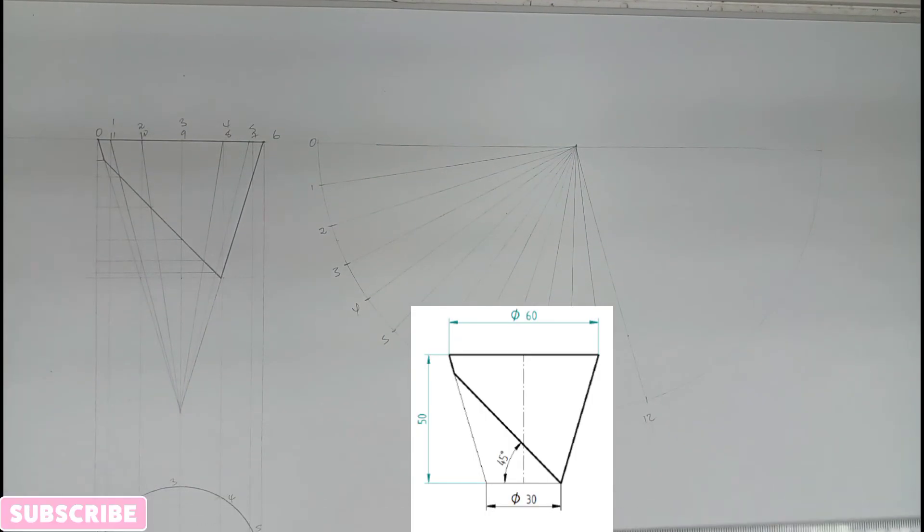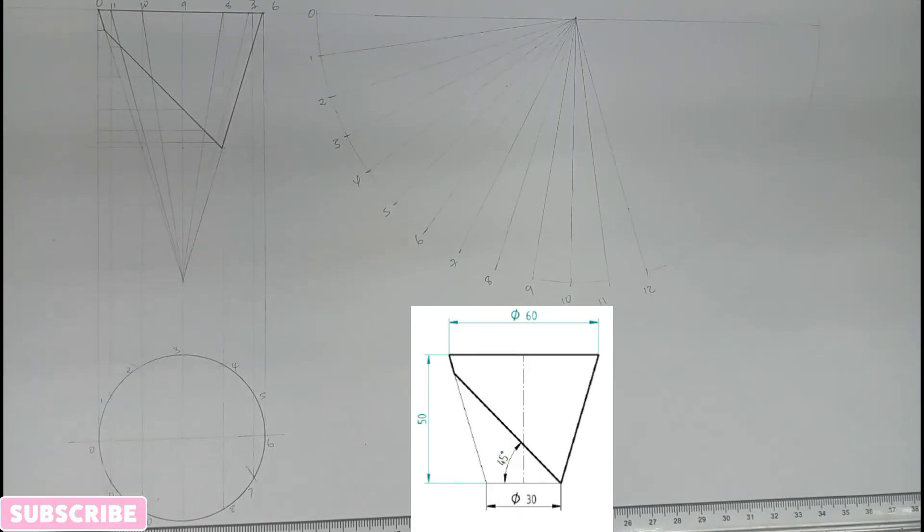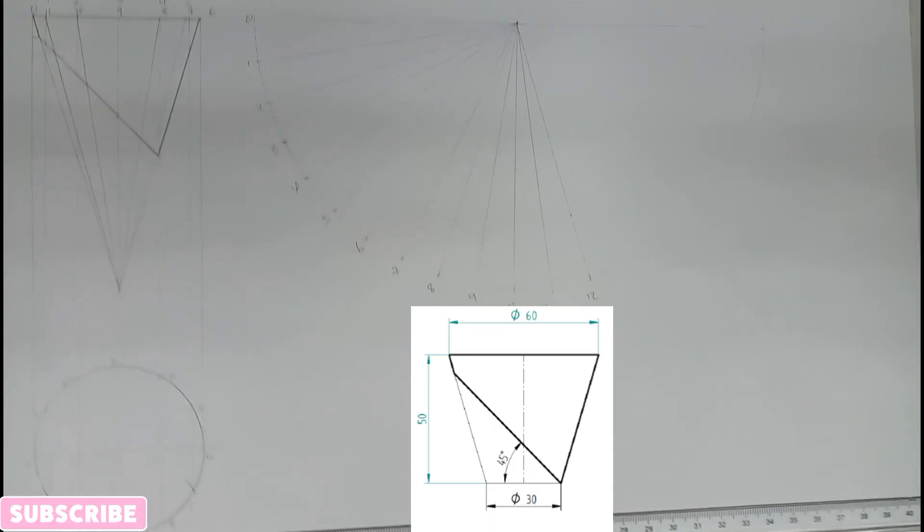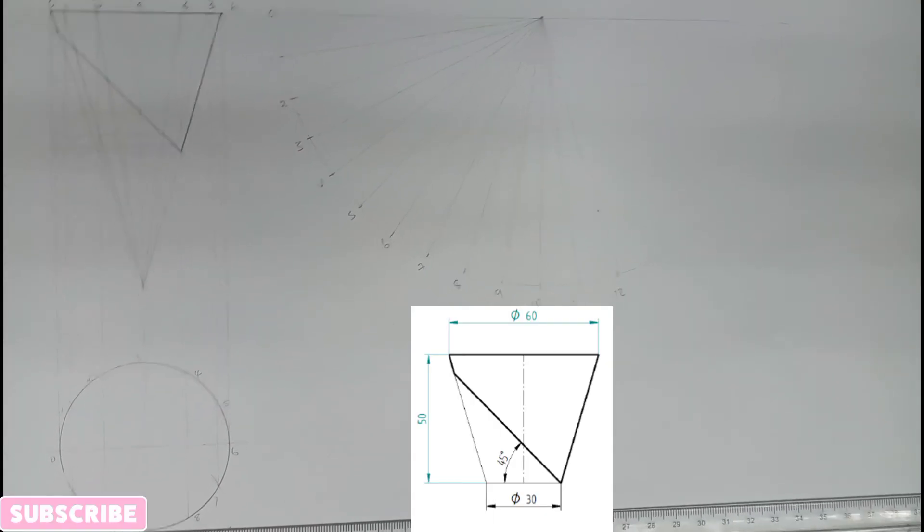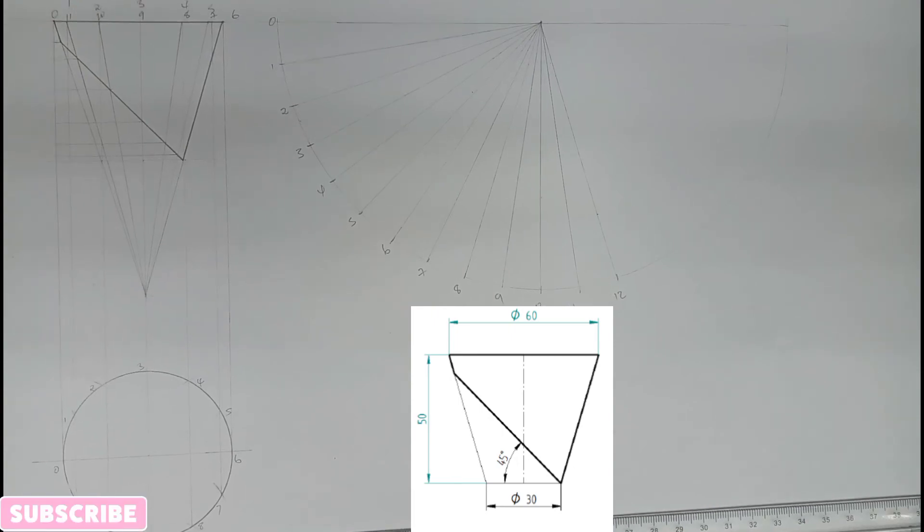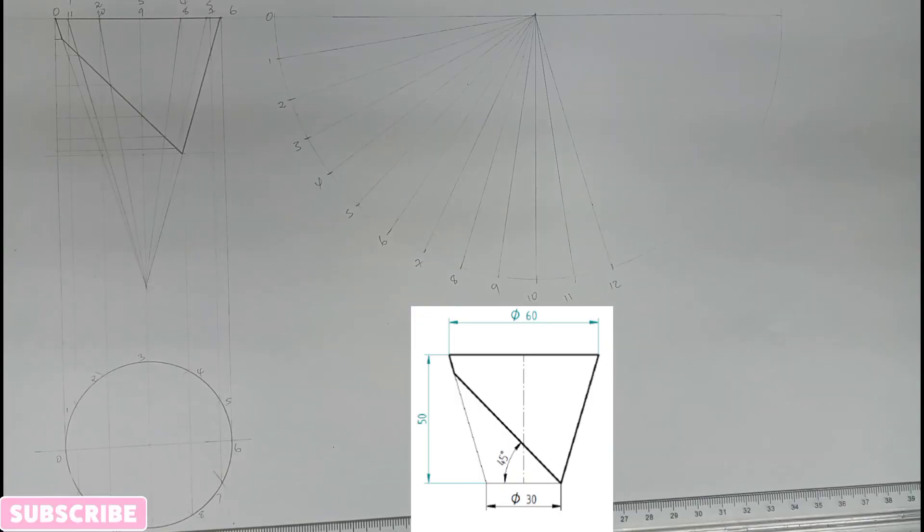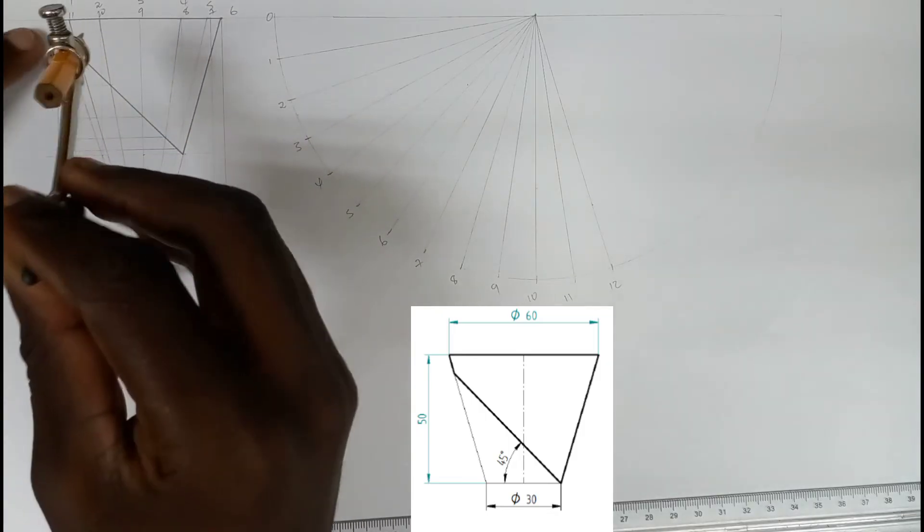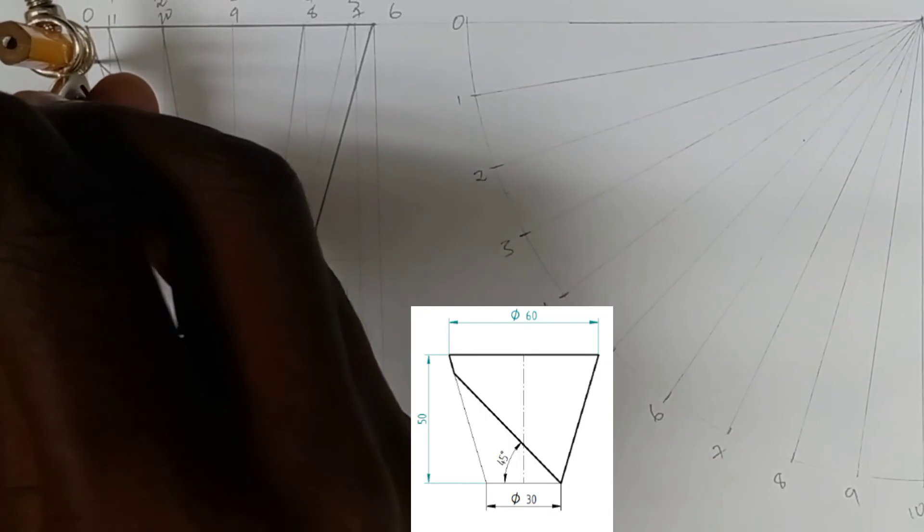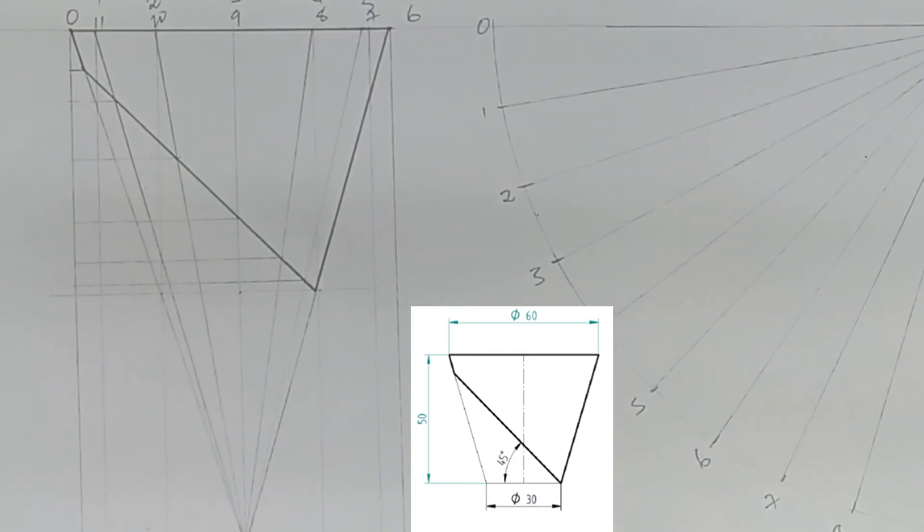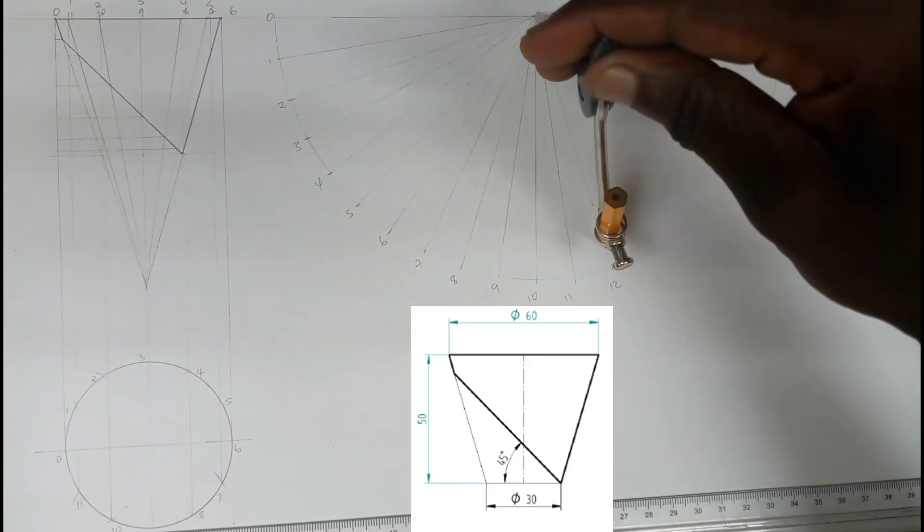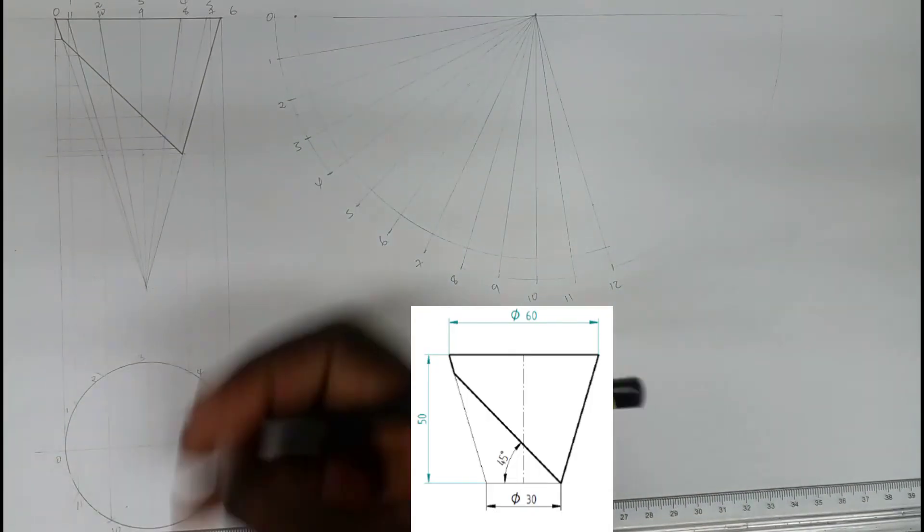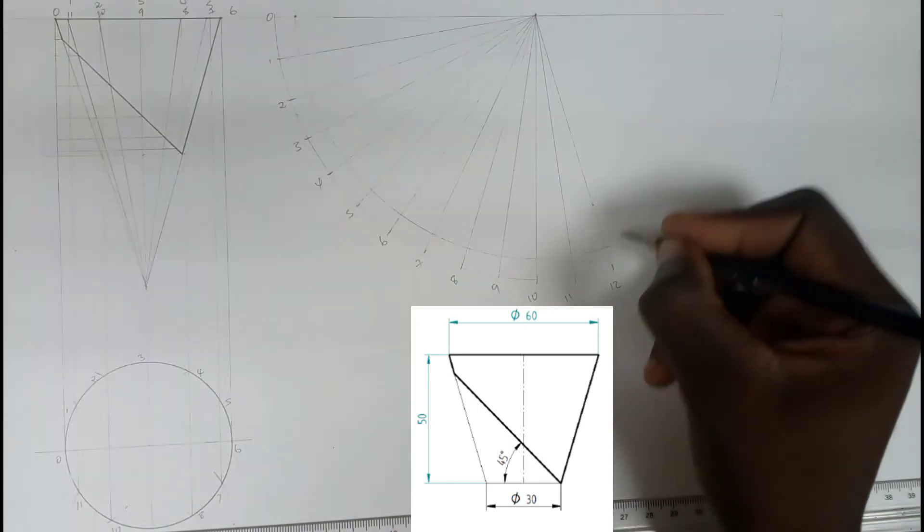From this point, measure to this point. Use the same radius to strike a circle. This is point 0 and 12.